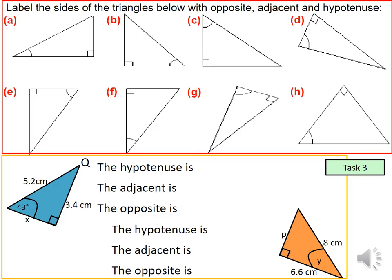All right for this task guys can you label the sides of the triangle below with the opposite, adjacent and hypotenuse. So can you please have a go at these questions and upload your answers to class charts. Thank you.